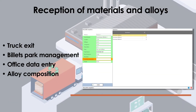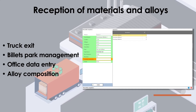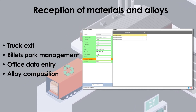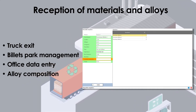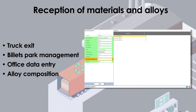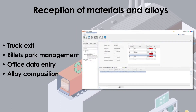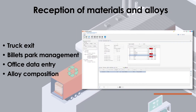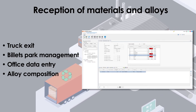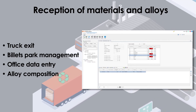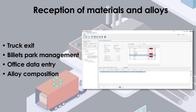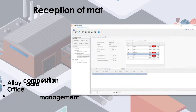Billets are managed by fleet and by alloy. Each time a truck is received, an operator enters or scans the receipt in KM Extrusion, allowing for real-time display of the number of billets available per alloy. On the office side, a user enters the composition of the alloy to make sure that the cast received is within the required tolerances.